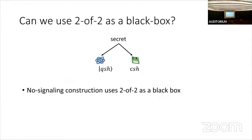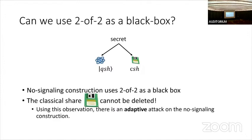Can we use this two-of-two sharing scheme as a black box? Our no-signaling construction does do this. But if we try to adapt this to the adaptive setting, it doesn't quite work out. The issue intuitively is that the classical share can never be deleted, so over a long period of time as the adversary corrupts more and more shares, it eventually accumulates lots of information that it can use to subvert later deletions. There is in fact an explicit attack in the adaptive setting on our no-signaling construction.